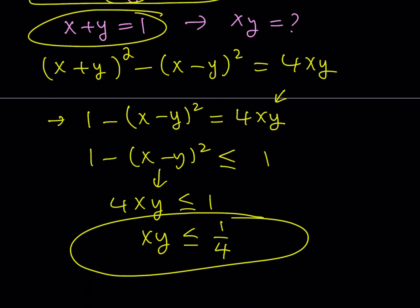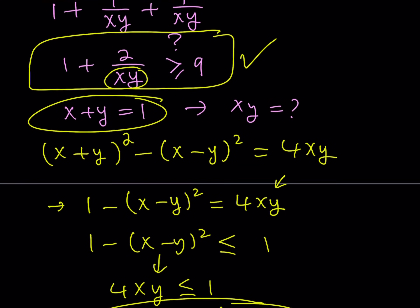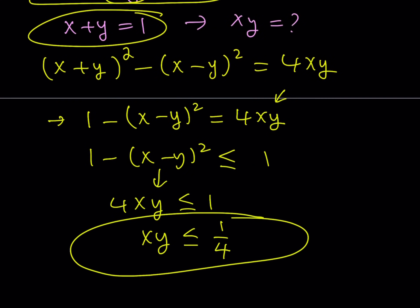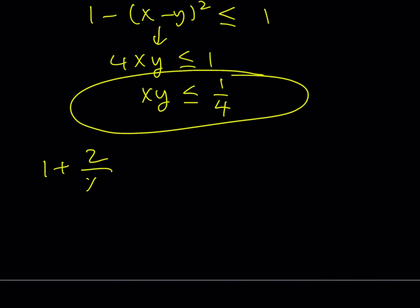So the question now is how can I go from this to this one? 1 plus 2 over xy. Okay, so this is what I'm trying to get at. In other words, if this is true, then what does this become? Okay, here's what we can do. Since x and y are both positive, I can just go ahead and reverse the process. If xy is less than or equal to 1 fourth, this implies that 1 over xy is greater than or equal to 4. Great. Because we can just use the reciprocals.